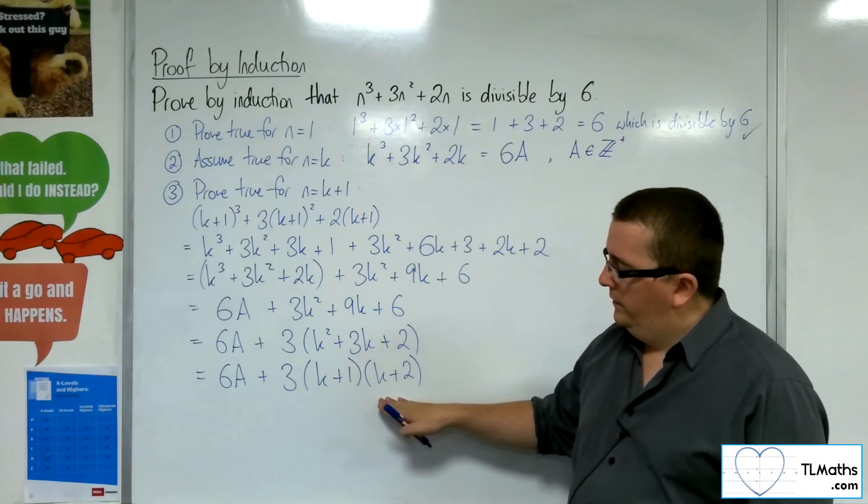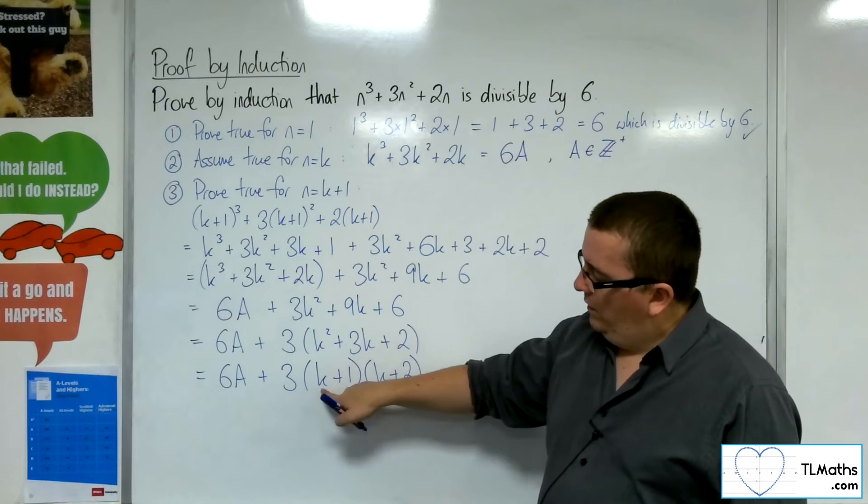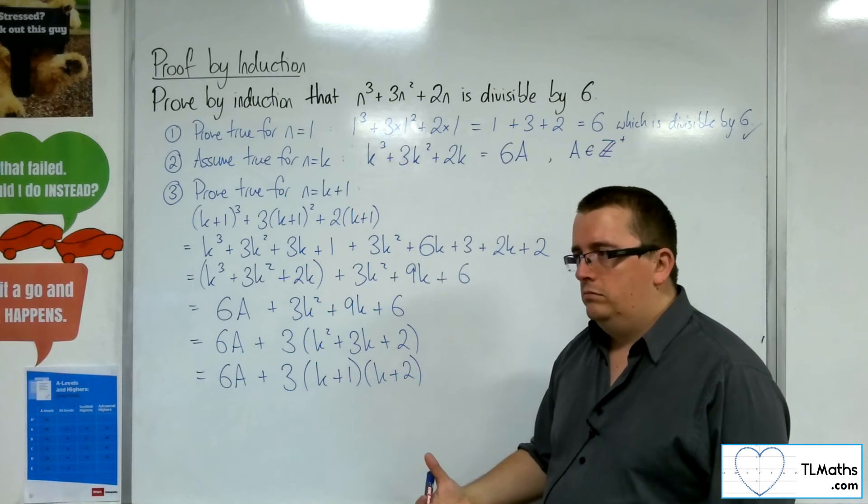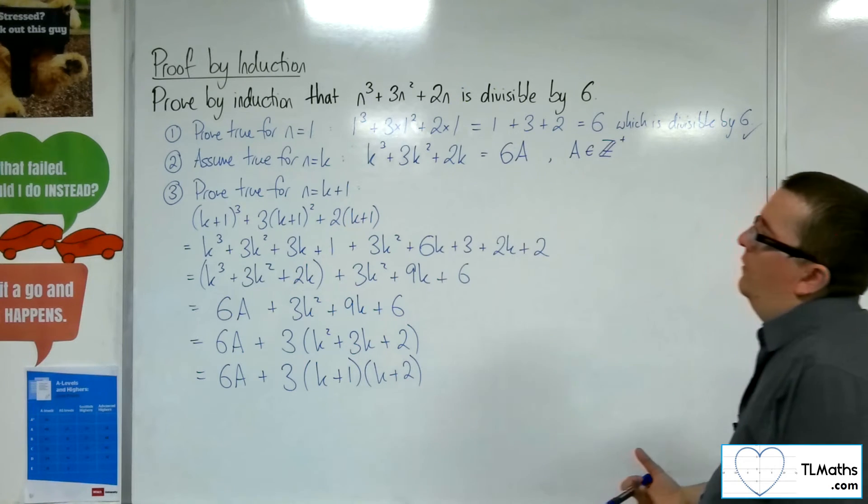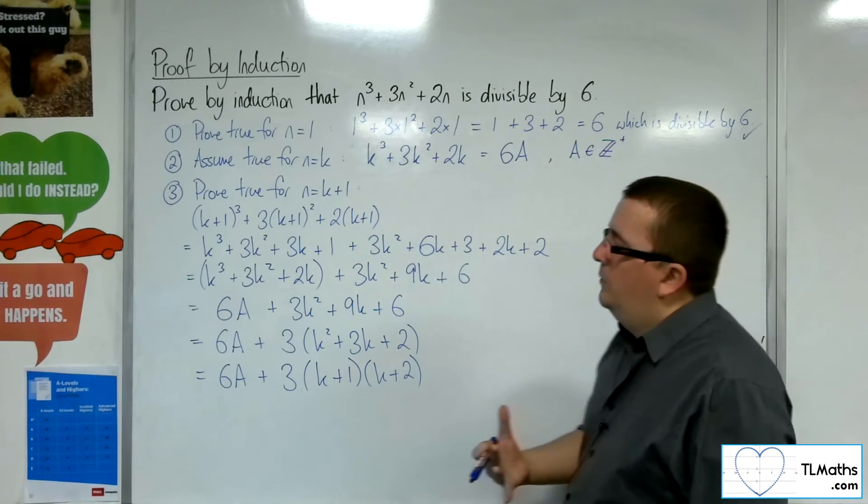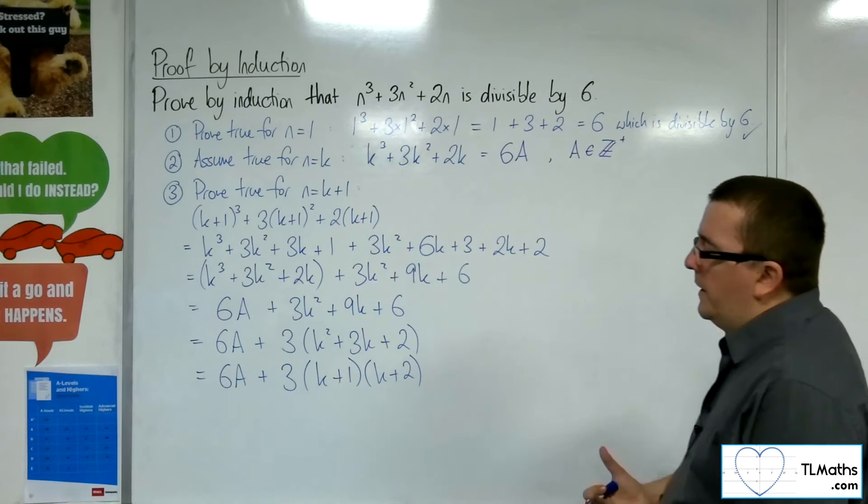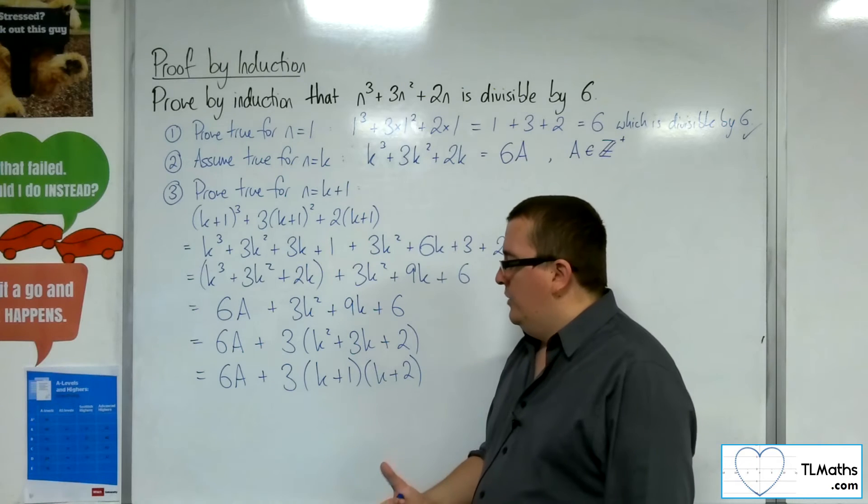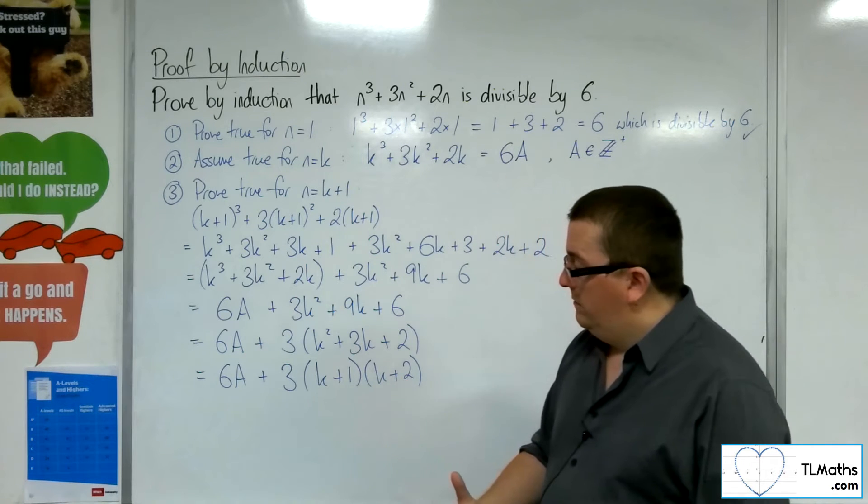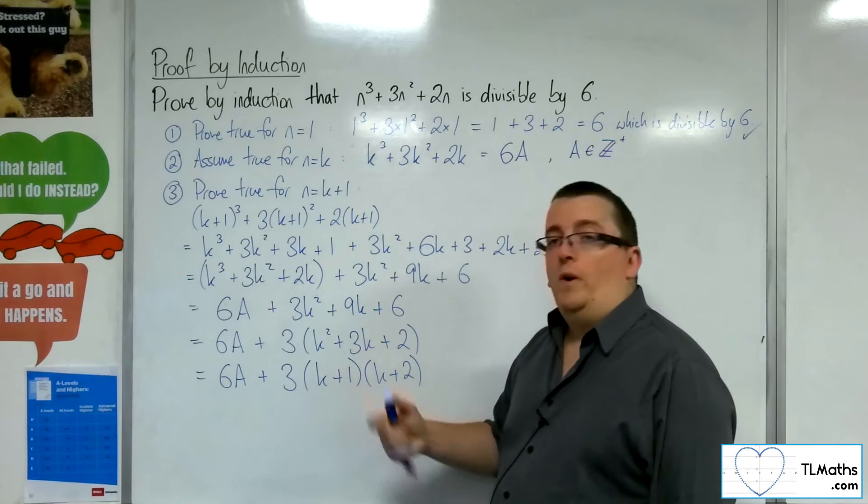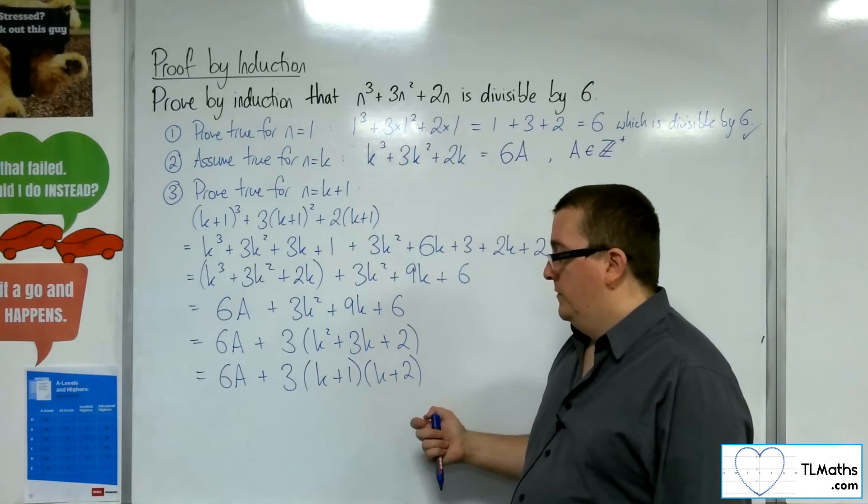Now, this k plus 1 times k plus 2 that we've got there. Now, that is, if k is an integer, which we're really saying, we haven't really stated that, but that is what we're assuming here. If k is an integer, then k plus 1 is an integer and k plus 2 is an integer.